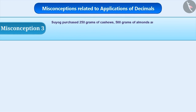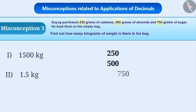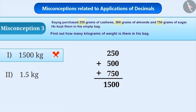Misconception 3: Suyok purchased 250 grams of cashew, 500 grams of almonds and 750 grams of sugar. He kept them in his empty bag. Find out how many kilograms of weight is there in the bag. Sometimes, students don't read the question properly. Due to this, they give incorrect answers. Some students add weights 250, 500 and 750 to obtain the result as 1500 and choose option 1 as the answer.